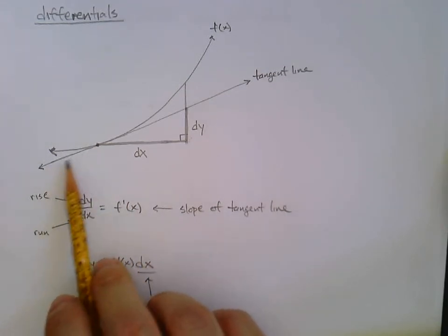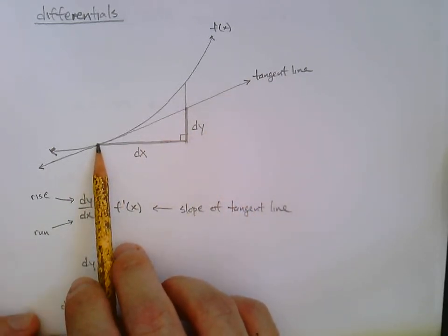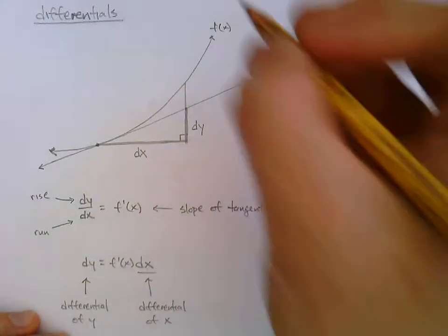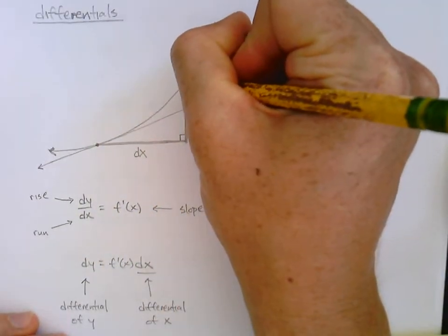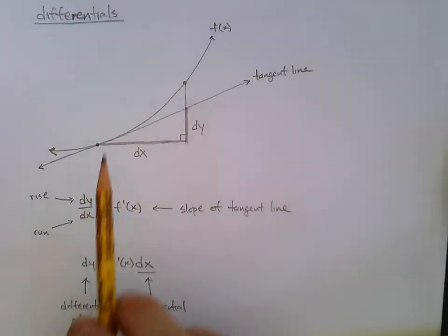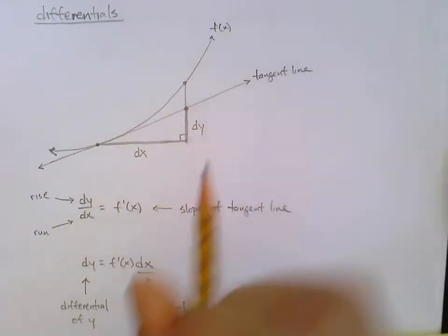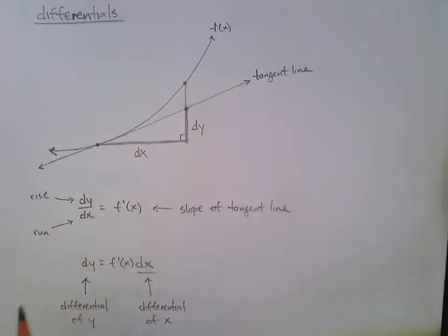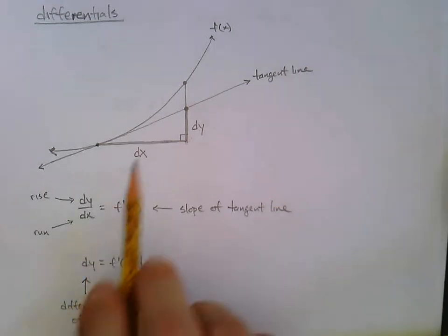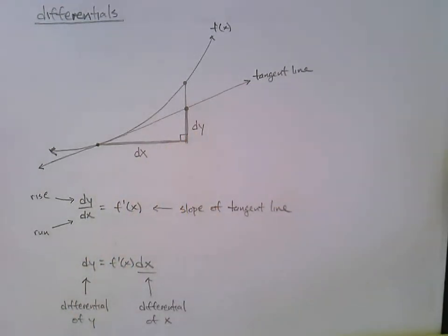This point right here where the tangent line occurs, that is the easy value. What we are trying to approximate is up here on the function itself. We would like to know this y value, but we're going to end up finding this y value. And this will be our approximation. So how do dy and dx come into play? Let's see it. I'm going to keep this page on standby.